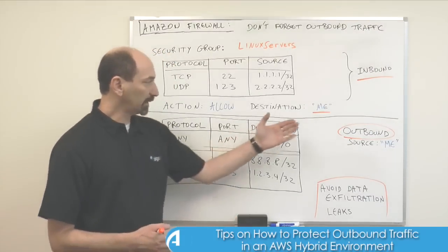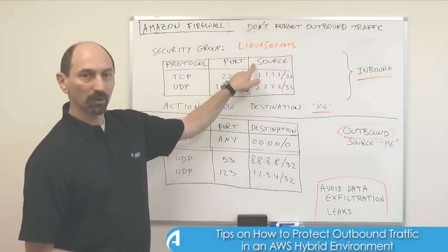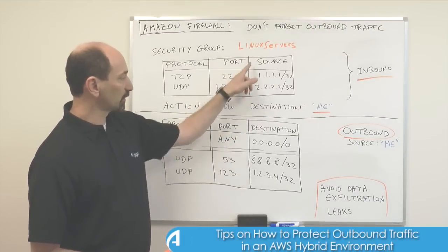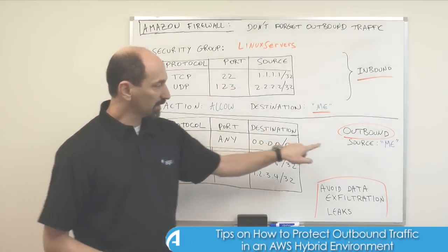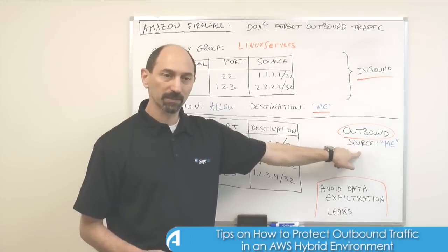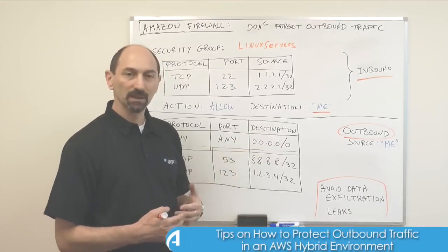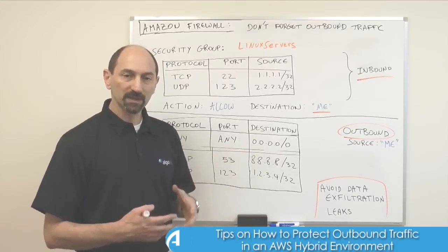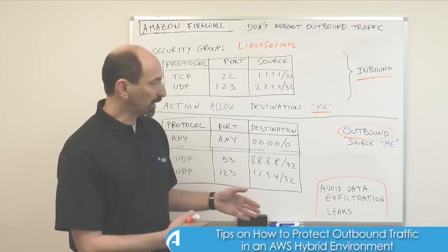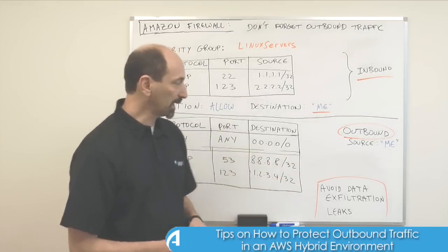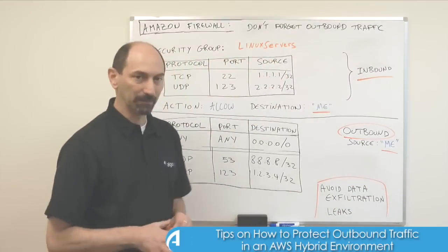Now if you look at the outbound tab, you will see that there is no source column. Instead of the source column, there is a destination column, and the source of each rule is implicitly me. So the outbound rules are always from the instance that the security group is applied to towards other places. The source is always implicitly me.